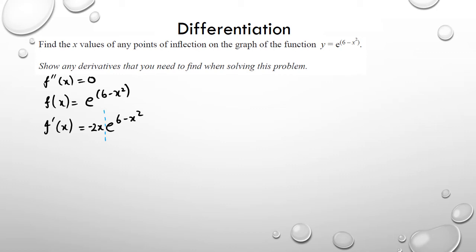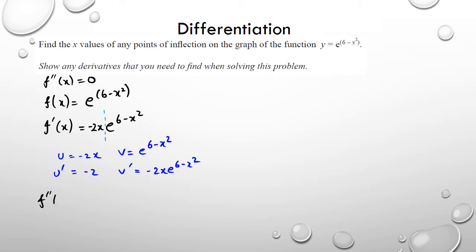So I'm going to put this as: u equals negative 2x, v equals e to the power of 6 minus x squared, u dash equals negative 2, v dash equals negative 2x e to the power of 6 minus x squared. Which means my f double dash of x is going to be u dash v plus u v dash.